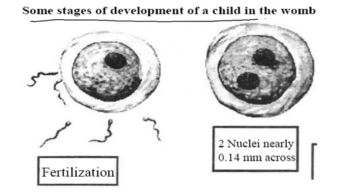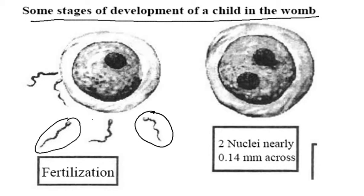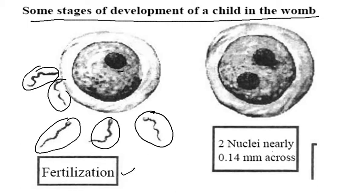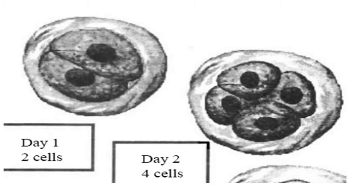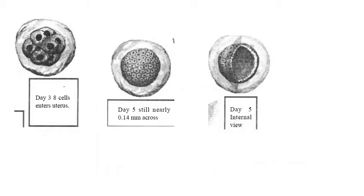Some stages of the development of the child in the womb: the egg is given by the female parts and the sperm is produced by the male. When they both are in contact it is called fertilization. The nucleus is nearly 0.14 mm across. After one day, two cells are formed. In two days, four cells are formed, continuing like this. After three days, eight cells are formed, and the cell enters the uterus.